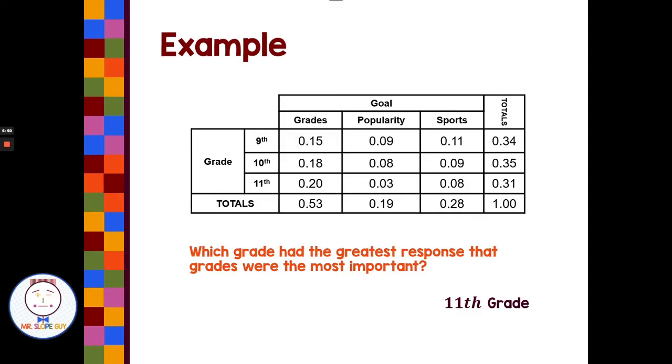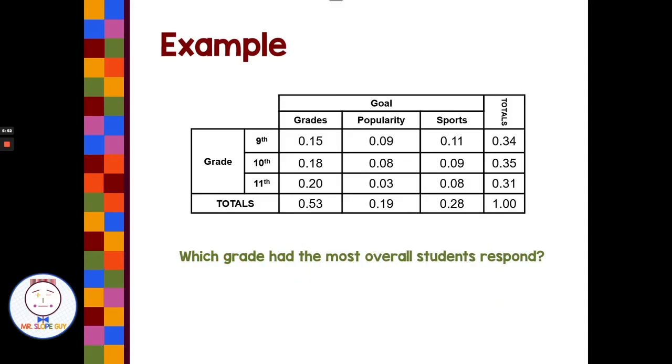So what else do we have here? We have which grade had the most overall students respond? All right, so we're looking at totals for 9th, 10th, and 11th grade here. And they're pretty even, 0.34, 0.35, 0.31. They're all in the 30 percent area. Slightly higher for 10th grade. 0.35 or 35 would be the greatest respondents for 10th grade.